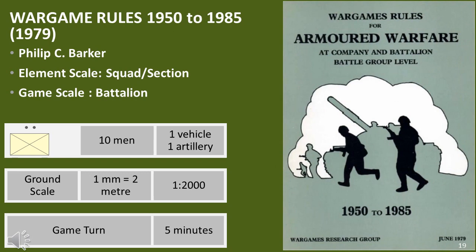In 1979, a major rewrite of the WRG rules was published specifically for modern conflicts called Wargamers Rules for Armoured Warfare 1950–1985. This edition proved very popular due to its focus on modern warfare; the other rules available for this period were too complex to be playable and these rules filled the gap beautifully. A large amount of supporting material was published and they were often used in competitions. They were a simple and playable set of rules which could allow players to refight modern conflicts in a reasonable period of time.